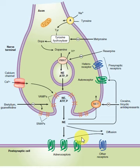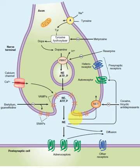Once the agonist action is completed, the norepinephrine diffuses out of the synaptic cleft. Some of the norepinephrine is transported by the norepinephrine transporter back into the cytoplasm of the pre-synaptic terminal, and some is taken up via autoreceptors — this constitutes the termination of action.